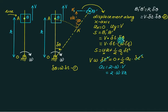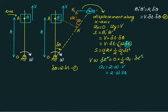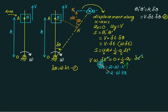Since del-theta equals omega times del-t, the horizontal displacement S equals v times omega times del-t squared. Using the kinematic equation S equals u_x times del-t plus one-half times a_c times del-t squared, and since initial velocity u_x is zero, we get a_c equals 2 times omega times v. This is the Coriolis component of acceleration, where v is the radial velocity outward and omega is the angular velocity of the link.